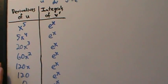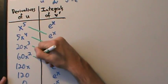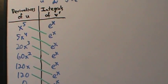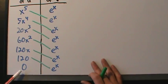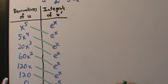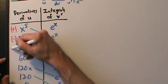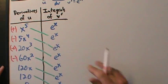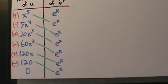Now we pair them up diagonally. The zero gets paired with nothing, so we stop at zero — that's why we always go all the way to zero. Then remember, the signs alternate: plus, minus, plus, minus, plus, minus. That last sign doesn't matter because zero isn't paired with anything.